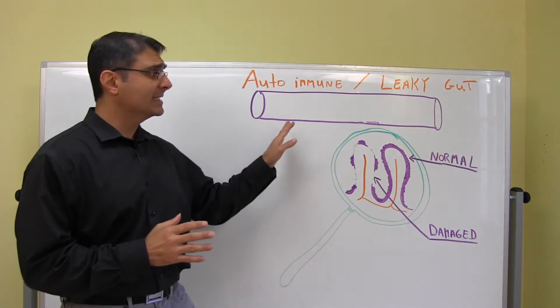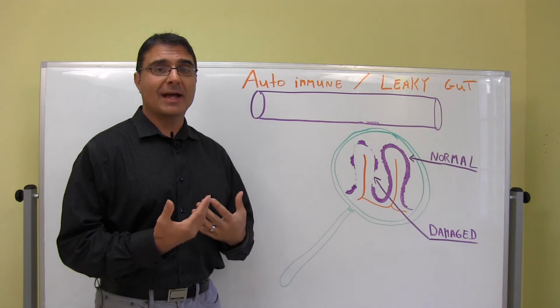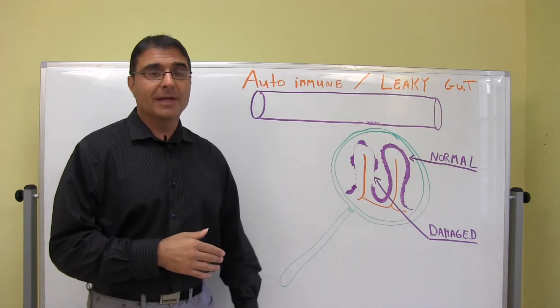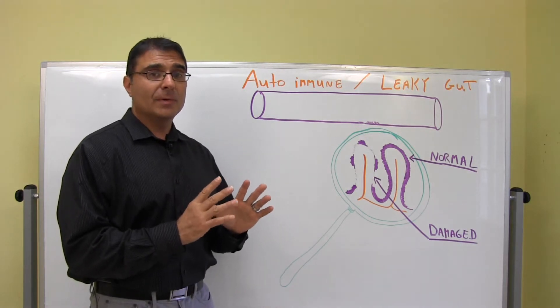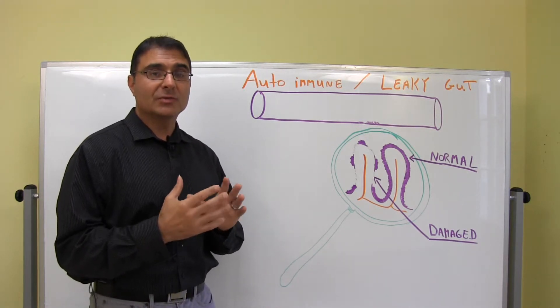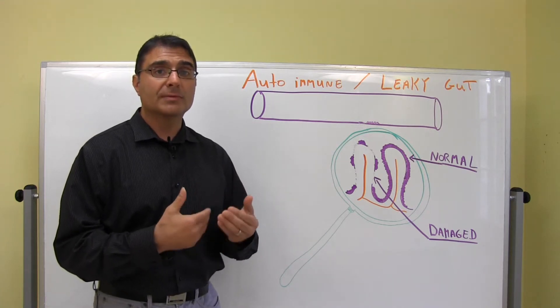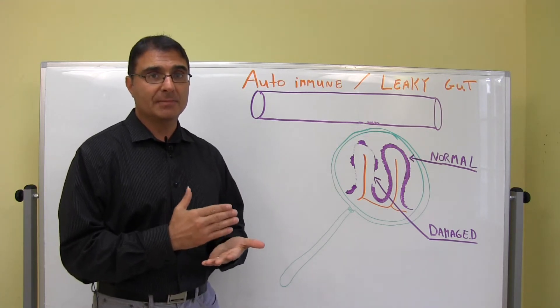Basically, in the intestinal tract, the intestinal tract is this long tube, essentially you could say it starts at your mouth and ends at your bum. In this tube, we have different parts that do different jobs, and in the small intestines, that's the area where we absorb most of our vitamins and minerals.